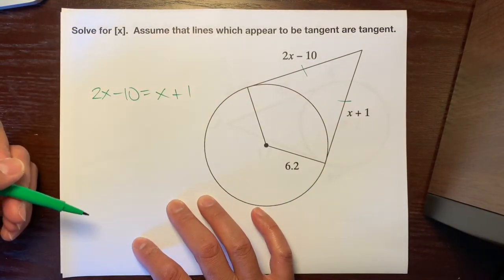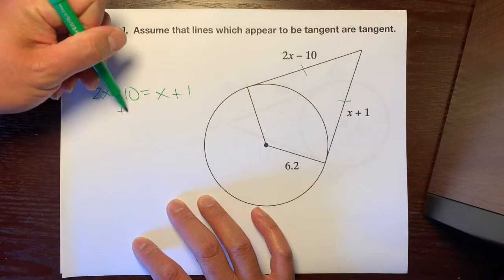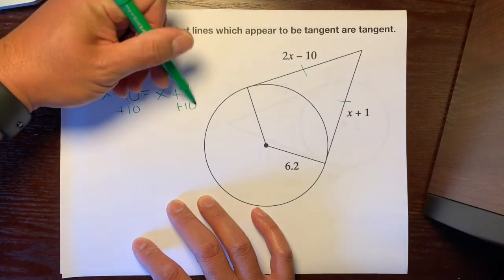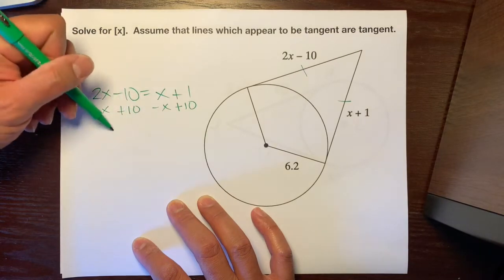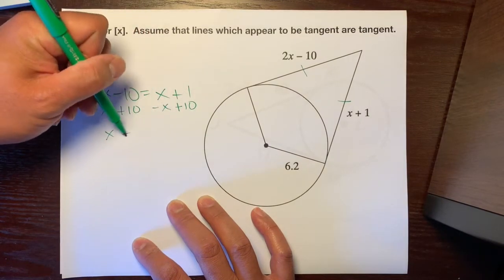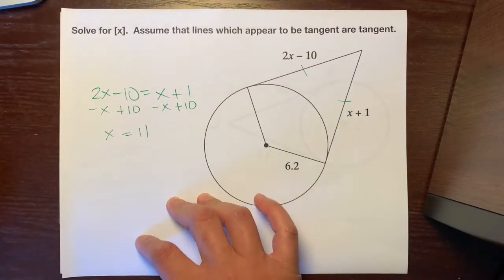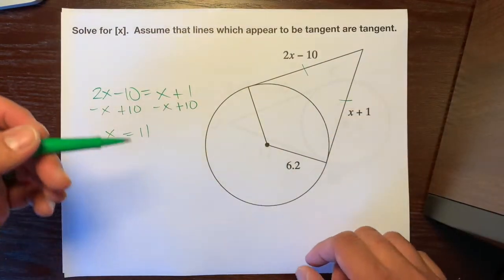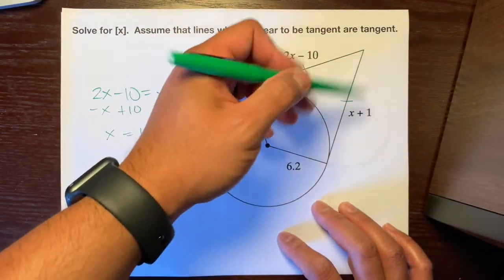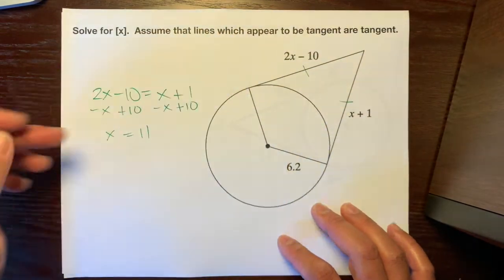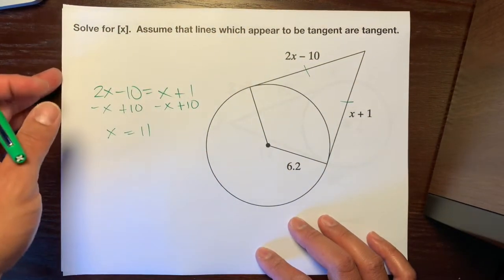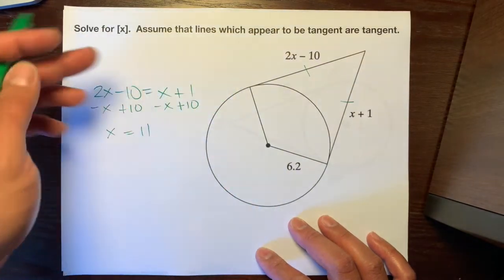So, let's just do some algebra. Let's add this 10 to both sides, and let's subtract this x to both sides. So, 2x minus x is just x. 1 plus 10 is equal to 11. There you go. And that's simple. So, when you're trying to find x for two tangent lines, they give you the lengths of the two tangent lines. Just set them equal to each other, and you can ignore what you don't need.